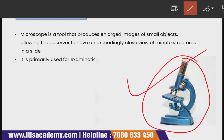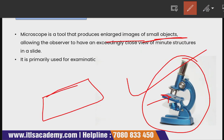This is how a microscope generally looks, and you must have seen this kind of microscope in your schools and colleges used in laboratories to perform experiments. A microscope is a tool that produces an enlarged image of a small object, allowing the observer to have an exceedingly close view of a minute structure in a slide. You place your slide with the sample on the stage and look through the eyepiece.